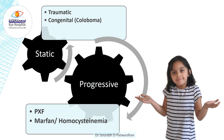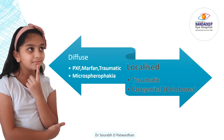We have to think whether it is a static zonular weakness or it is a progressive one. In progressive conditions like pseudo-exfoliation, Marfans, and homocystinemia, over a period of time there will be further weakness of the zonules at different segments. Also, we have to consider whether it is a diffuse weakness or whether it is a localized weakness.